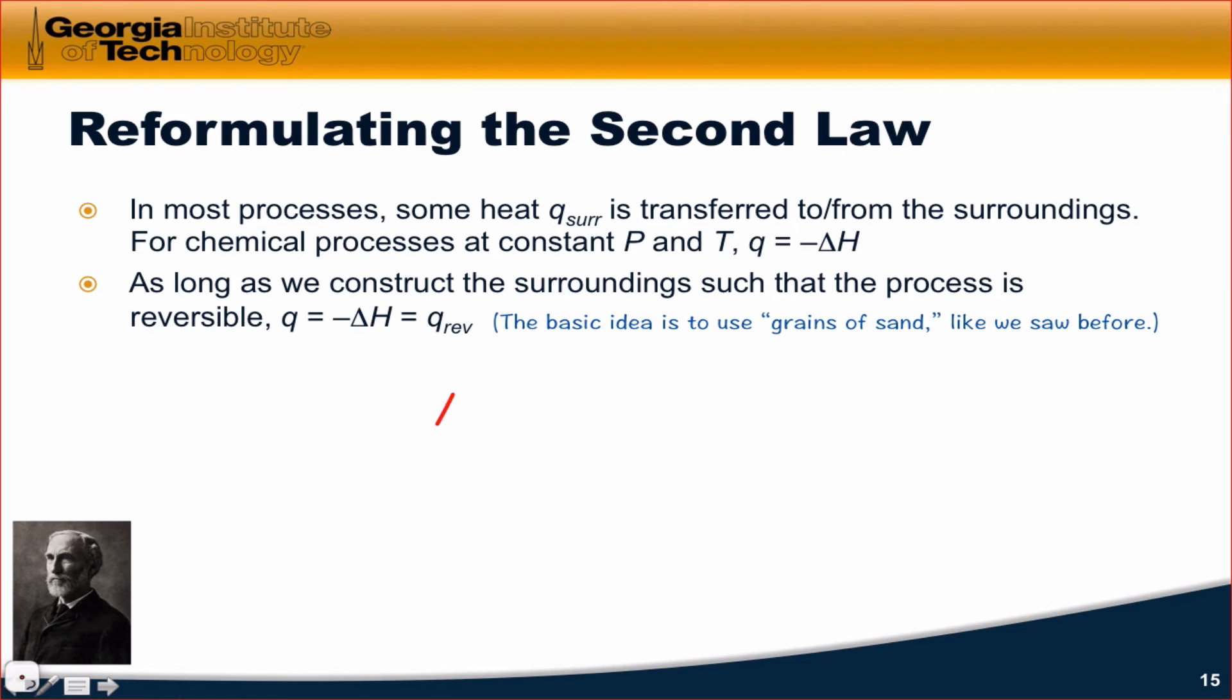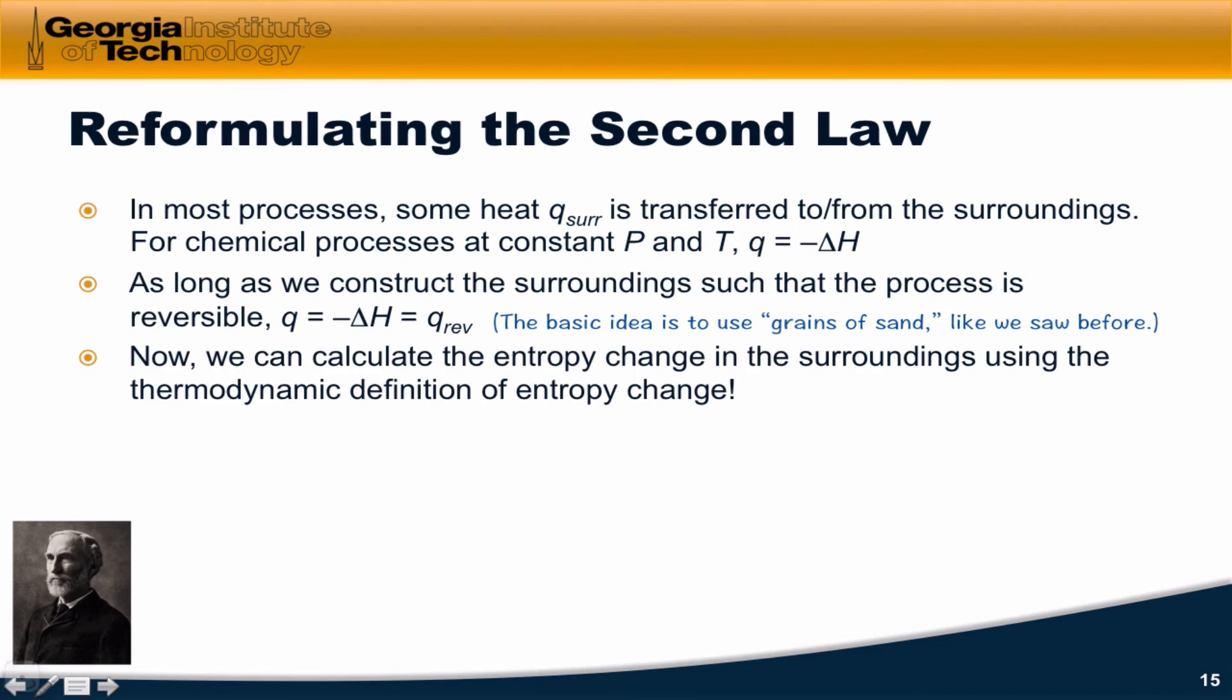For a chemical process, this is a little less intuitive. For example, how do we barely allow a chemical process to go forward? The basic idea is to do it one molecule at a time - one molecule of A reacts, then another, very slowly and deliberately on an infinitesimal scale. As long as we run the chemical reaction reversibly, we can calculate the entropy change in the surroundings using the classical definition: delta S of the surroundings equals negative delta H divided by temperature.